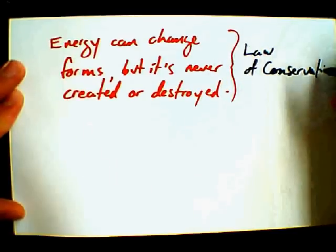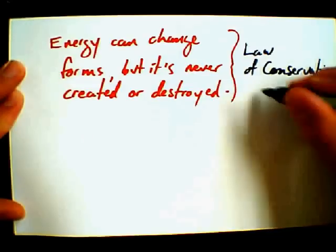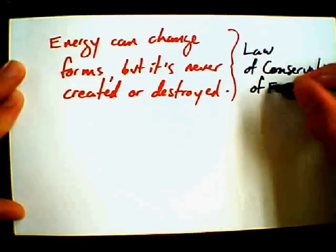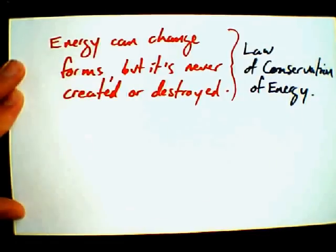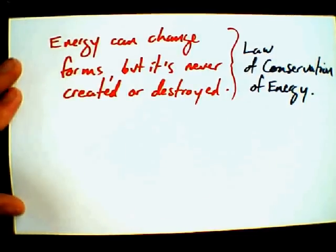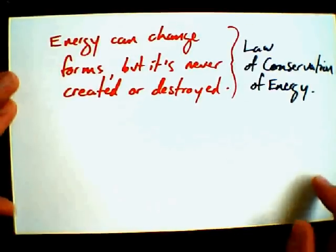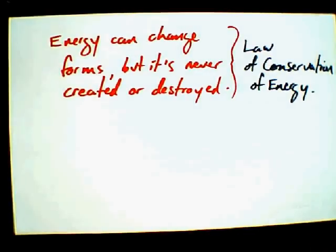We may return to this later. And we'll probably call it something like the law of conservation of energy. Well, we won't call it something like that. That's exactly what we'll call it. But we'll deal with it maybe a little bit more mathematically. The idea is that you can't create energy and you can't destroy energy. All you can do is shift it around from place to place and form to form.